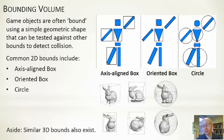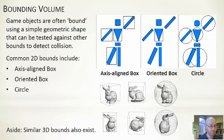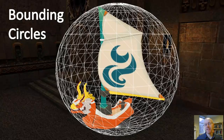There are also three-dimensional variants of all of these: a 3D axis-aligned box, oriented box, or a sphere. You can extend further to ellipsoids and other simple mesh shapes, as well as more exotic structures like k-DOPs — but we don't need to worry about those for two-dimensional games.